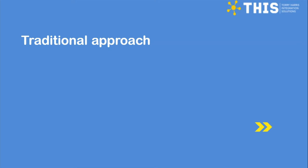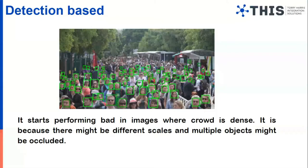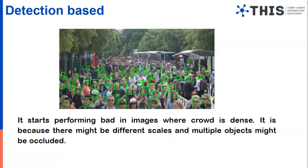First, we will see the traditional approaches — detection-based. As everyone likely knows, this method detects the number of objects from an image or a video. In these images, the machine tries to detect objects which are in the foreground, but it cannot identify images in the background because the image is not clear, so the machine cannot understand that background information. This is one of the limitations in detection-based — it can only find objects where the machine can understand clearly, and other information is lost.